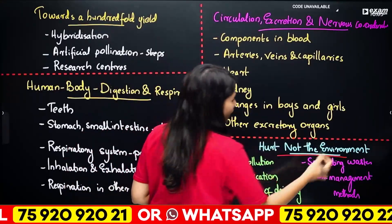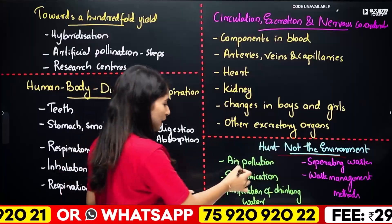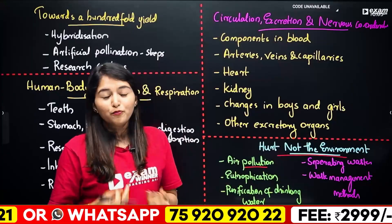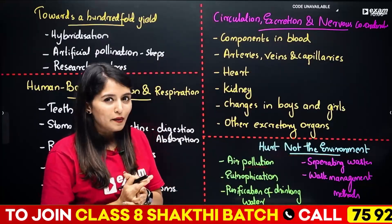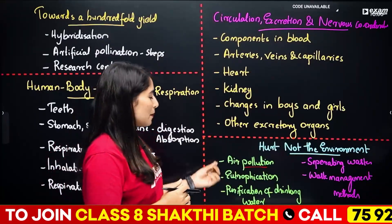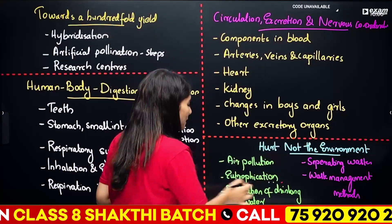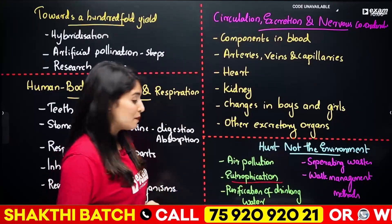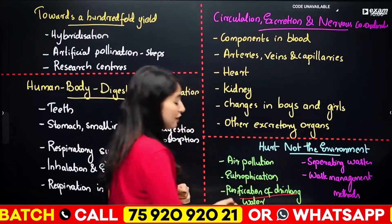The other part about the environment: the first chapter is air pollution. That means we have a lot of fuels and air pollution, and there are many remedies that are very important. Now, that is eutrophication.